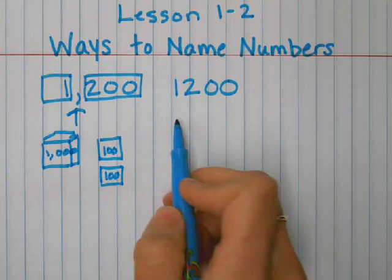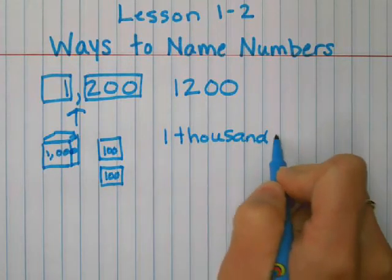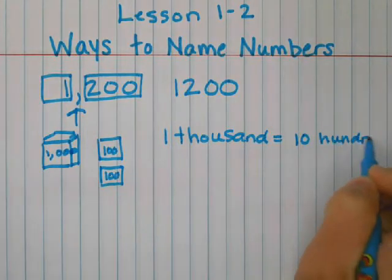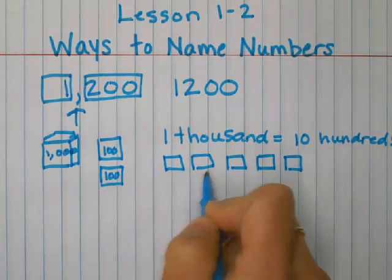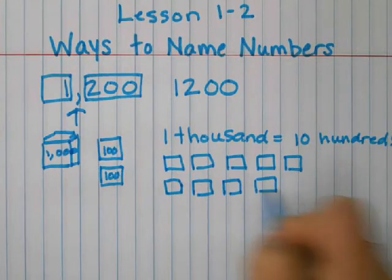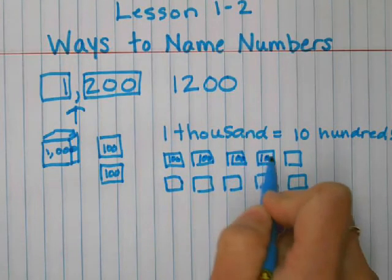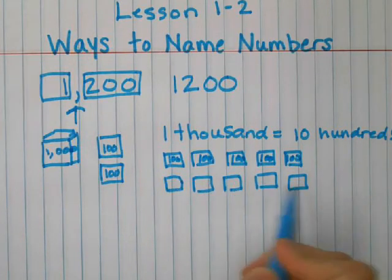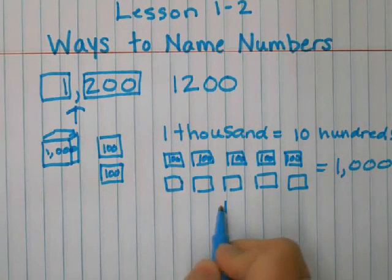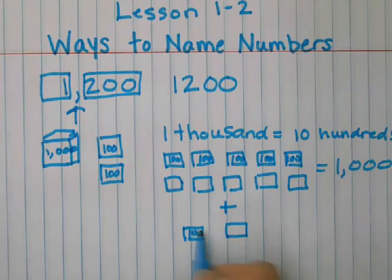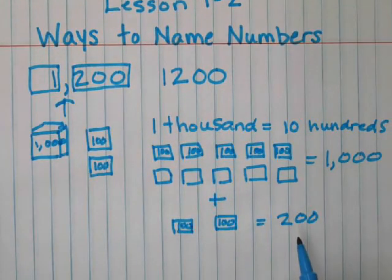Or I can do twelve hundred. One thousand is equal to ten hundreds. So I could draw ten hundreds to equal 1,000. These all represent 100: 1, 2, 3, 4, 5, 6, 7, 8, 9, 10. That is the same as 1,000. So I also need 200. So I'm going to add two hundreds. So ten hundreds plus two hundreds equals 1,200.